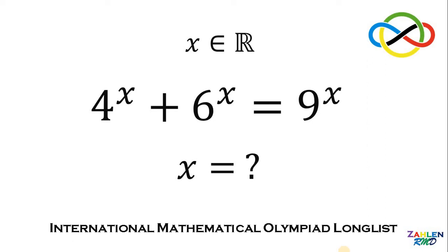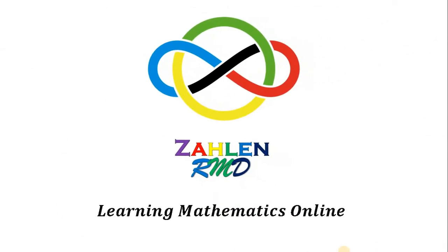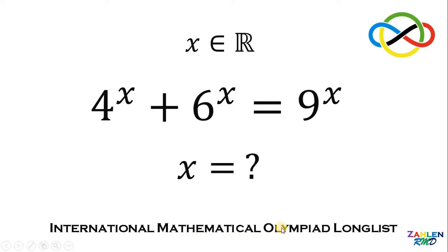Good day everyone. Here's our math challenge for today. This is from the International Mathematical Olympiad Longlist. Solve for the value of x given the equation 4 raised to x plus 6 raised to x equals 9 raised to x, wherein x is a real number.